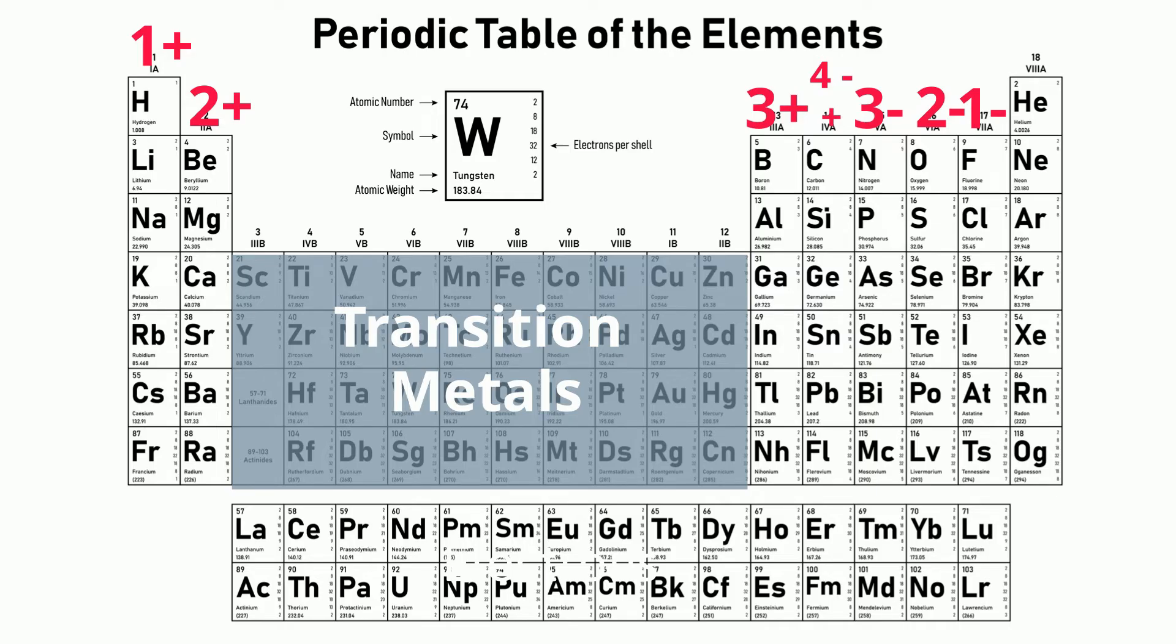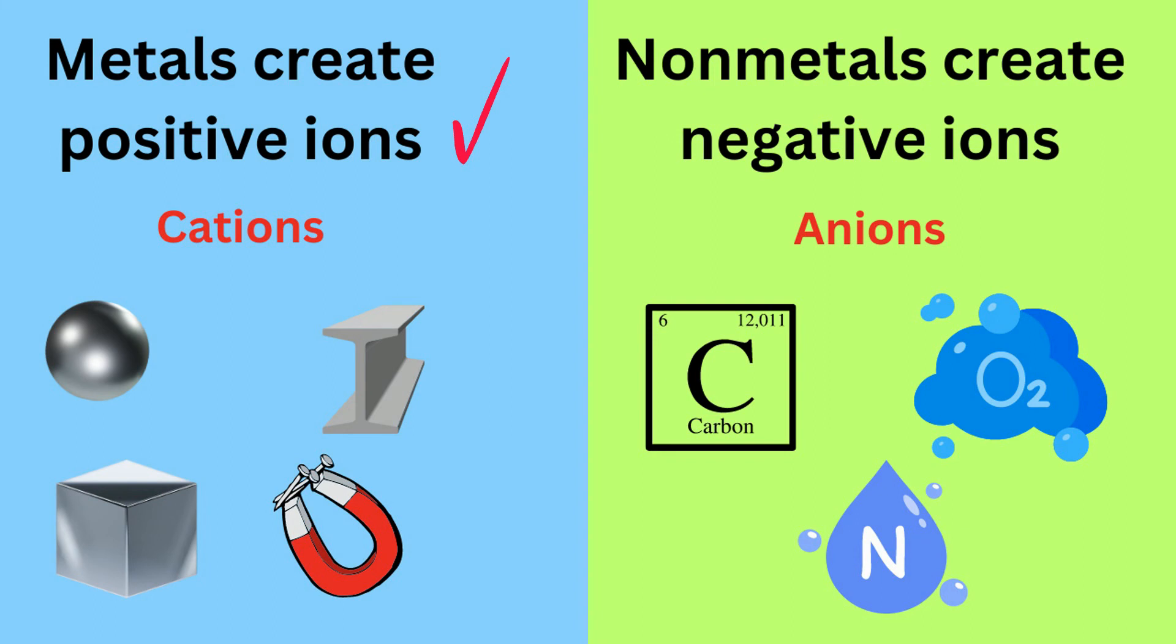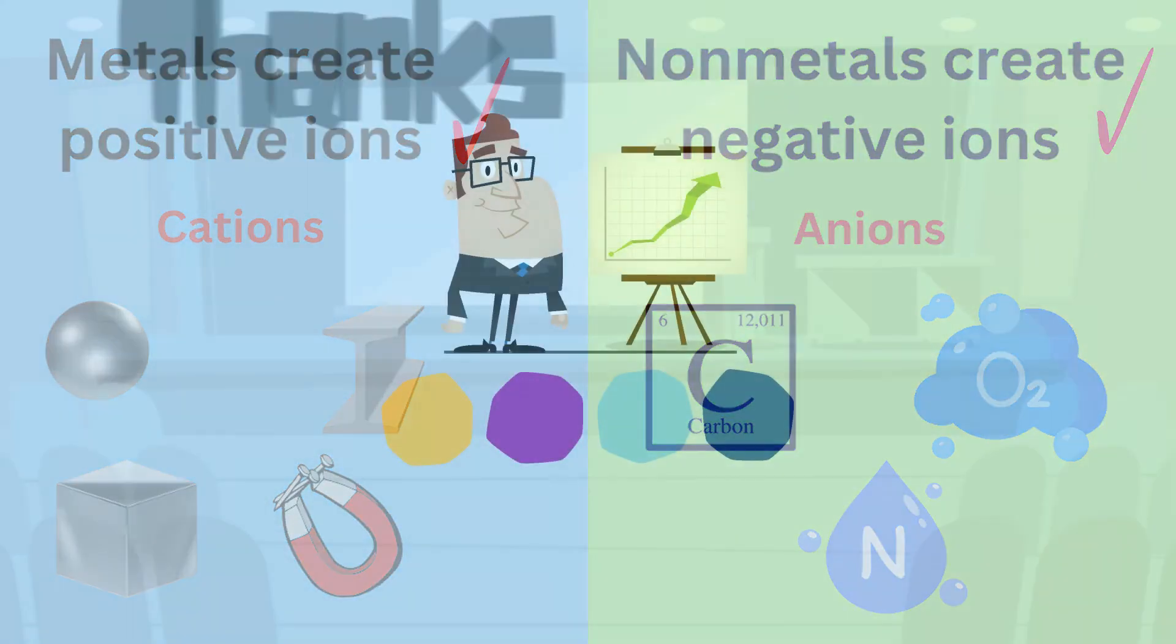And finally, the noble gases have a zero charge. So again, metals always form positive ions called cations, and non-metals form negative ions called anions. Thanks for watching,